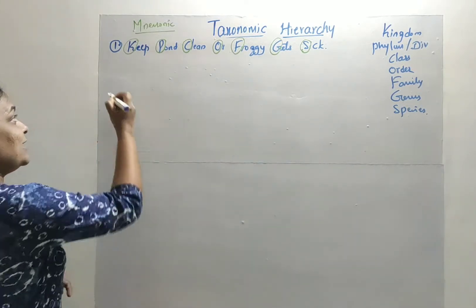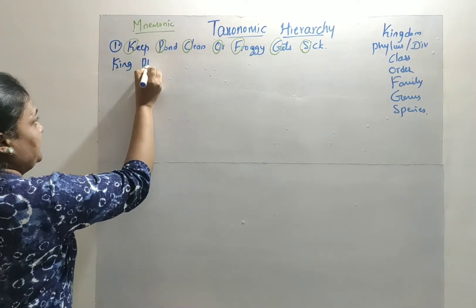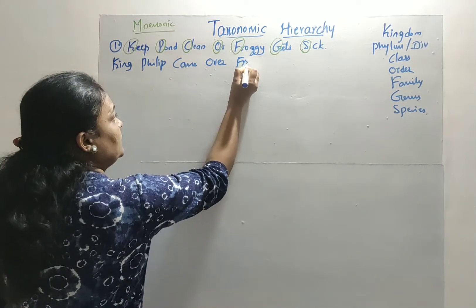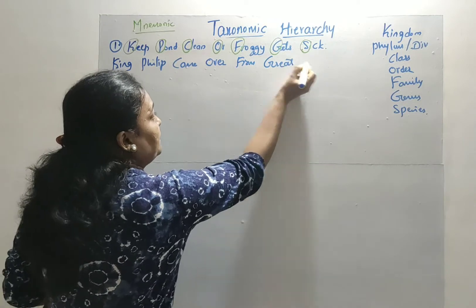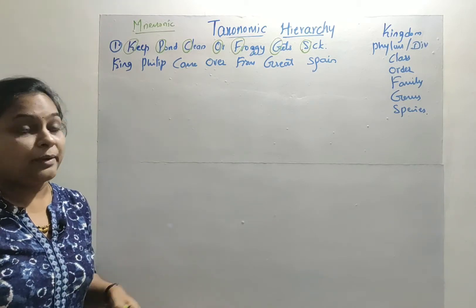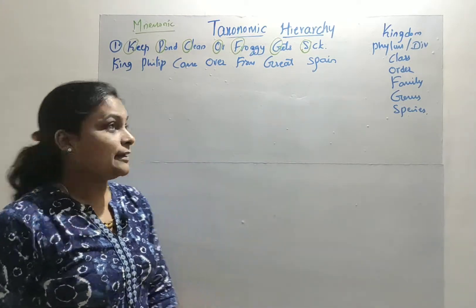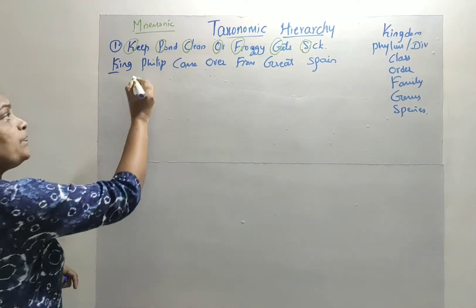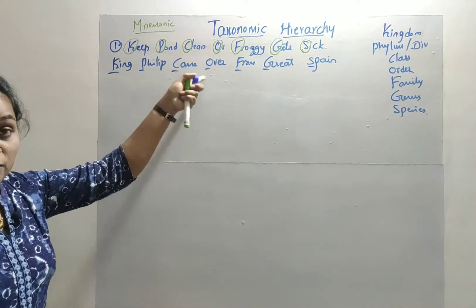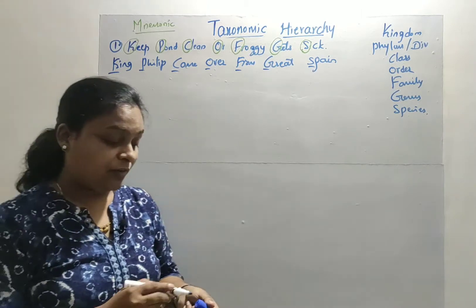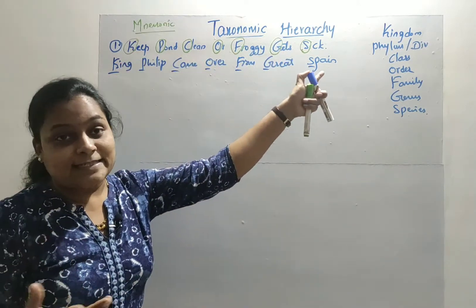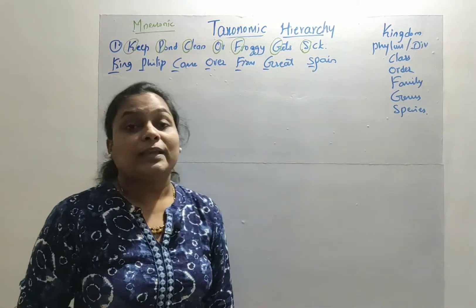There is one more very famous mnemonic for the sequence: 'King Philip Came Over From Great Spain.' Here K stands for Kingdom, P for Phylum, C for Class, O for Order, F for Family, G for Genus, and S for Species. You can remember whichever one feels more convenient to you.